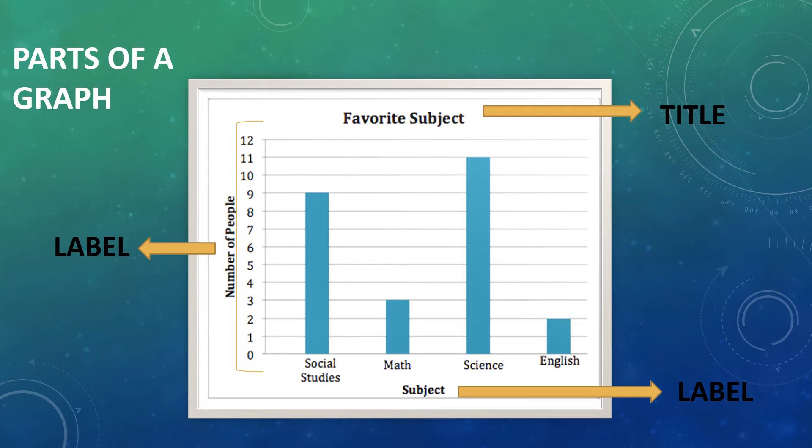On the x-axis, you can see the subjects — Social Studies, Math, Science and English. The y-axis shows the number of people. So, subjects and number of people are the labels.